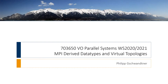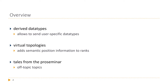Welcome to today's lecture on MPI derived data types and virtual topologies. We're going to discuss derived data types, which are a means within MPI to send user-specific types beyond the basic integer and floating-point types discussed so far. Afterwards, we'll discuss virtual topologies, which add semantic information to ranks and allow you to get more information about the structure of your problem, rather than just knowing that rank 17 wants to talk to rank 32.